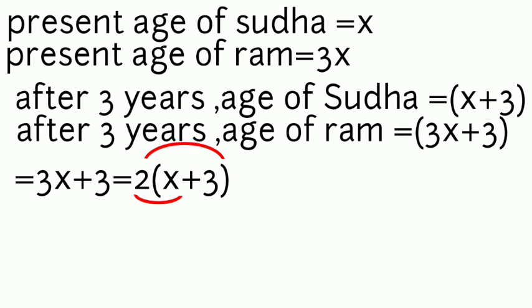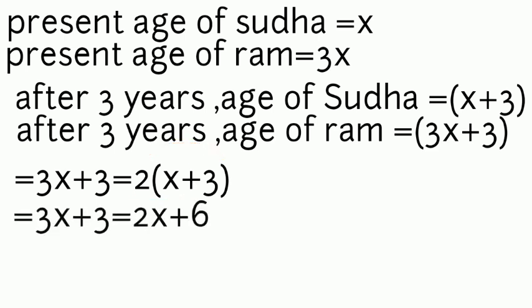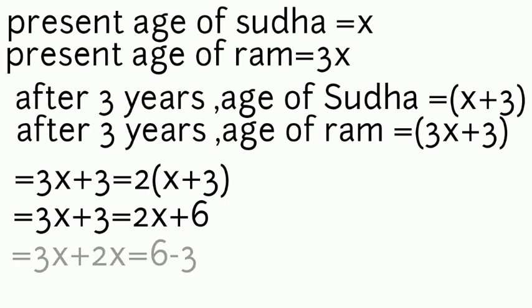Multiplying out the bracket: 2 × x and 2 × 3, we get 3x + 3 = 2x + 6. Shifting variables to one side and constants to the other: 3x − 2x = 6 − 3.